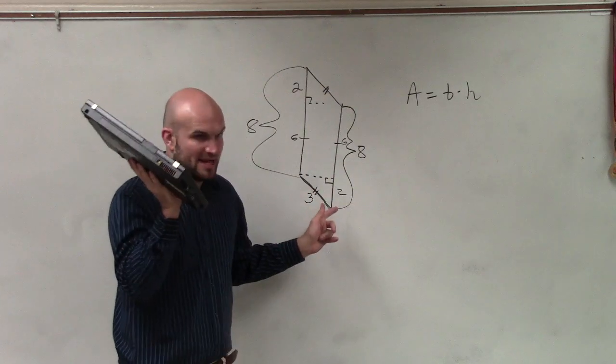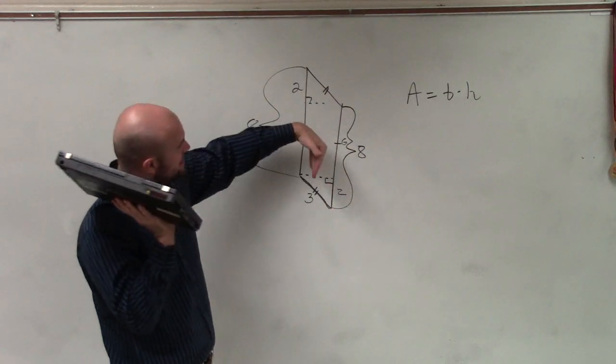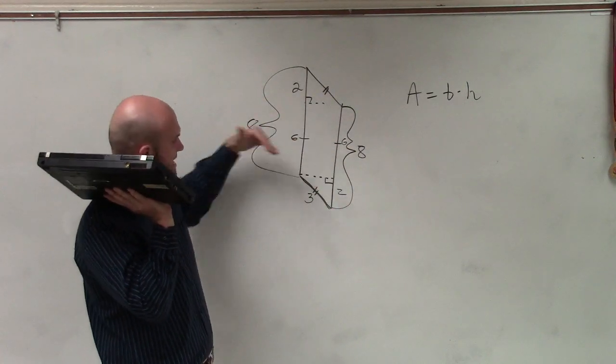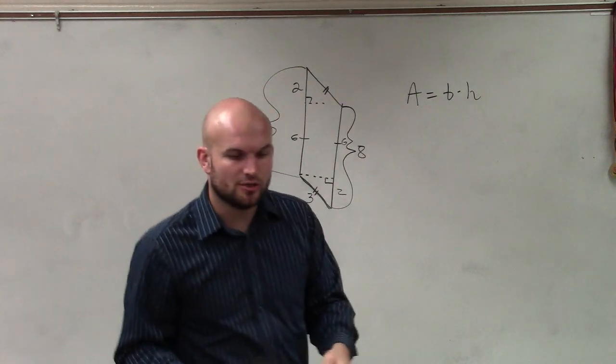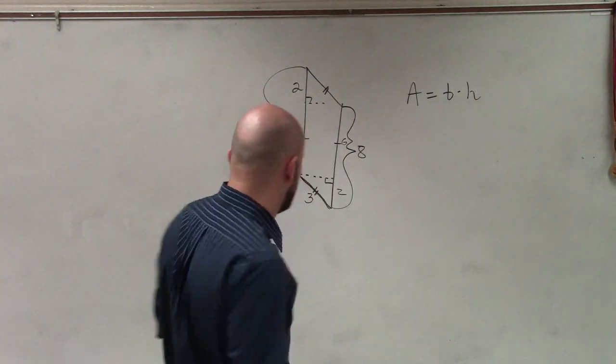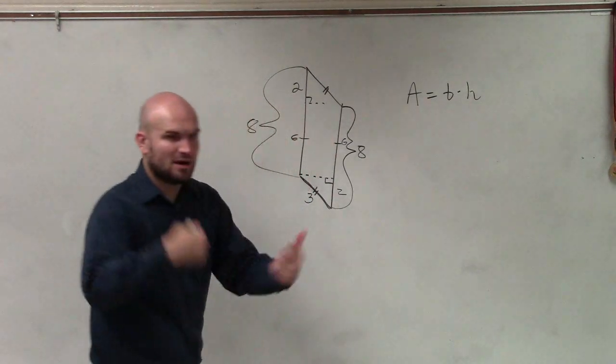So, if I put it on its base here, then you could say that three would be the base, right? But the problem is, if three would be the base, it's going to be like a weird shape. But what we could do is rewrite it as eight as the base. Because, remember, we talked about rotations, right?